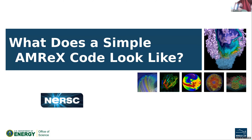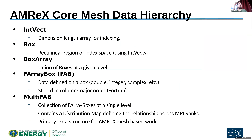Now let me show what a simple AMReX code looks like and introduce some vocabulary needed to understand the AMR data structures. First, an IntVect is an array of N dimensions used for indexing — simply a set of low indexes and high indexes defining an index space. A Box is then a union of boxes at a given level; you can think of a Box as the index space for a grid, with a collection of grids forming one level in your domain.